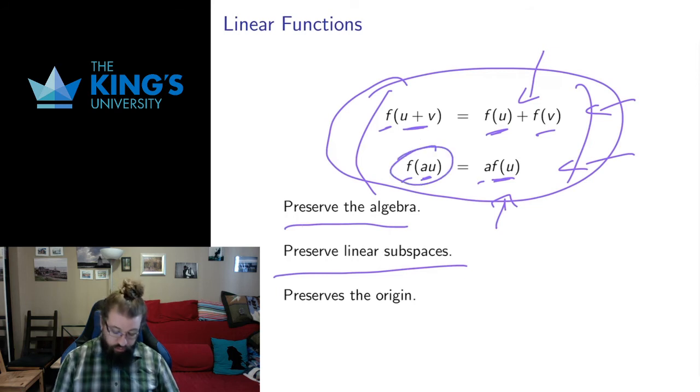Also, because of the scalar, if A equals zero this tells me that f of zero is zero. The zero vector goes to the zero vector, so these functions also preserve the origin. This is why we say they preserve linear subspaces, because linear subspaces include the origin.